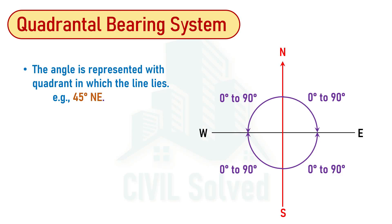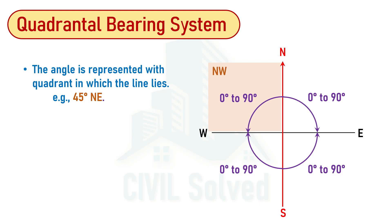For example, if the line lies in the northeast quadrant, 'NE' should be written along with the angle. Similarly, if the line lies in the southeast quadrant, 'SE' is written with the angle. If the line lies in the southwest quadrant, 'SW' is written, and if the line lies in the northwest quadrant, 'NW' is written along with the angle. In the next videos, I will discuss the interconversion of different bearing systems — how to convert from Quadrantal Bearing to Whole Circle Bearing and vice versa. Thank you for watching.